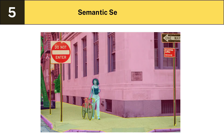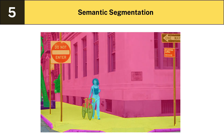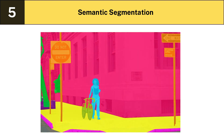Five: Semantic segmentation. Semantic segmentation is the annotation of every pixel within an image. Each segment is usually indicated by a unique color code. The end result would look something like this.